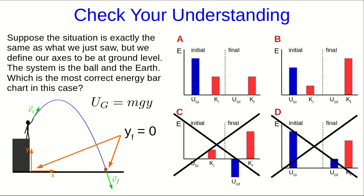And so c and d cannot be correct. Also c can't be correct because at the initial time the ball is at some non-zero value of y, a positive value of y, and so the initial gravitational potential energy can't be zero. So the answer here is b.